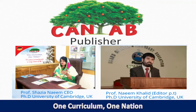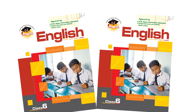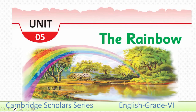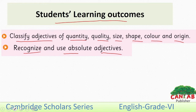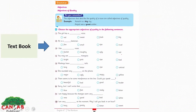Bismillahirrahmanirrahim. Welcome to the Canter Publishers video lessons. Before starting the lesson, dear students, you must have with you the Classics English textbook. We are going to start our lesson from Unit 5. The SLOs of this lesson are: classify adjectives of quantity, quality, size, shape, color, and origin; and recognize and use absolute adjectives. Page number 56 of your text — we are going to discuss adjectives and adjectives of qualities.